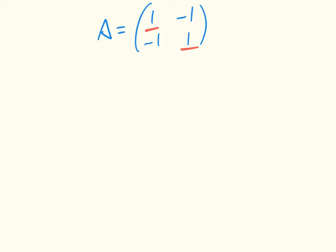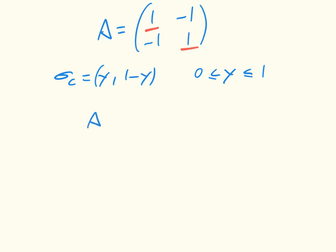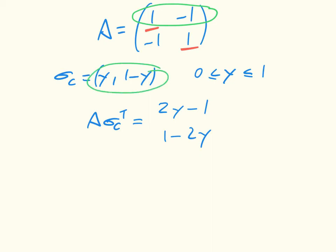So we consider a general case of what the column player is doing — just a mixed strategy. Y is any number between 0 and 1. If we had more strategies we'd need a more general case, but this will do. The quantity of interest is σ_c^T, the incomplete version of the utility. This gives us a column vector with values 2y minus 1 and 1 minus 2y. That comes from taking each row and multiplying it by the transposed column. We get a y and another y, and remember there's a minus 1.